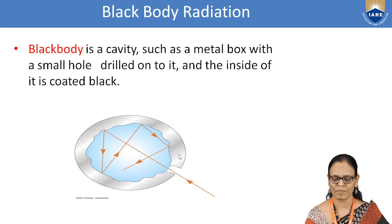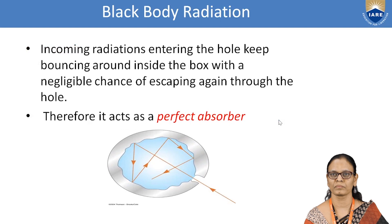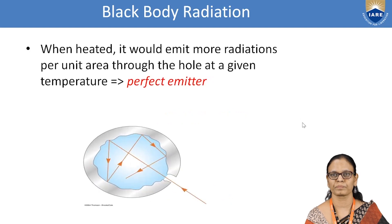Let us look at the black body. A black body is a cavity with a small hole drilled onto it and the inside of it is coated black. The incoming radiations enter the hole and they keep bouncing inside the box with negligible chance of escaping again means it acts as a perfect absorber. When the same black body is heated it would emit more radiations per unit area at a given temperature. It acts as a perfect emitter.